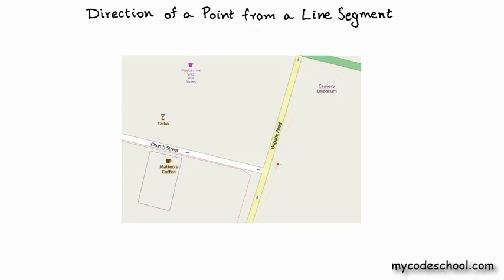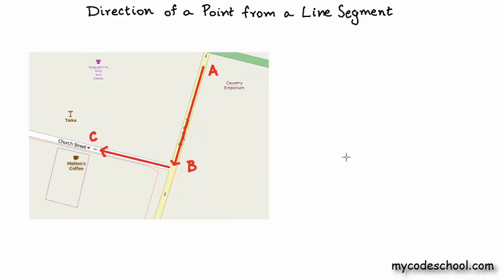This is a very fundamental problem and is commonly encountered, for example, when giving directions in an online map. Let's say we have a user at point A who wants to reach point C. A good set of directions would be to ask him to first reach point B and then take a right turn to reach point C. We know it's a right turn because point C lies to the right of line segment AB. Knowing the direction of a point from a line segment also acts as a building block for more complex problems, such as finding if two line segments intersect or finding the convex hull of a set of points.